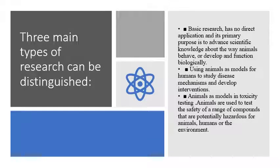We have three types of research. Basic research studies the animals themselves, such as their behavior and development. The second type uses the animal as a model for human disease to study that disease, its mechanisms, development, and so on. The third type uses the animal for toxicity testing — testing the toxicity of drugs over that animal to know if it is harmful to humans or the environment.